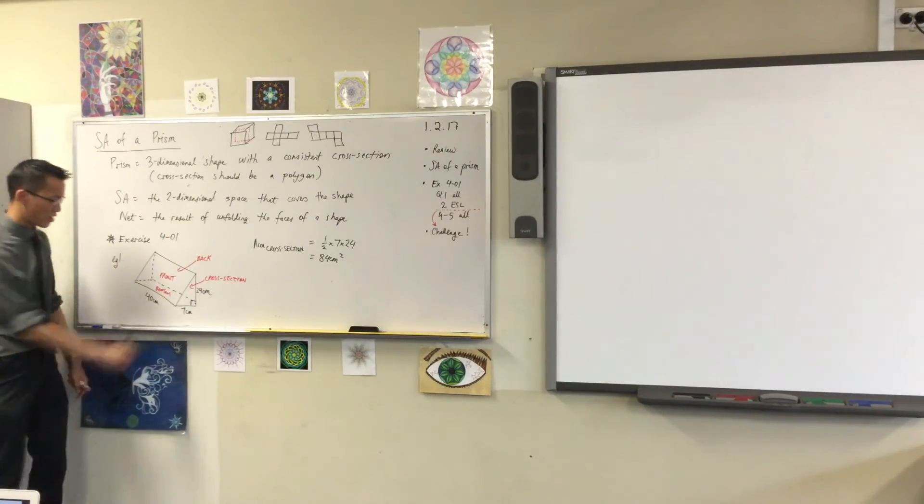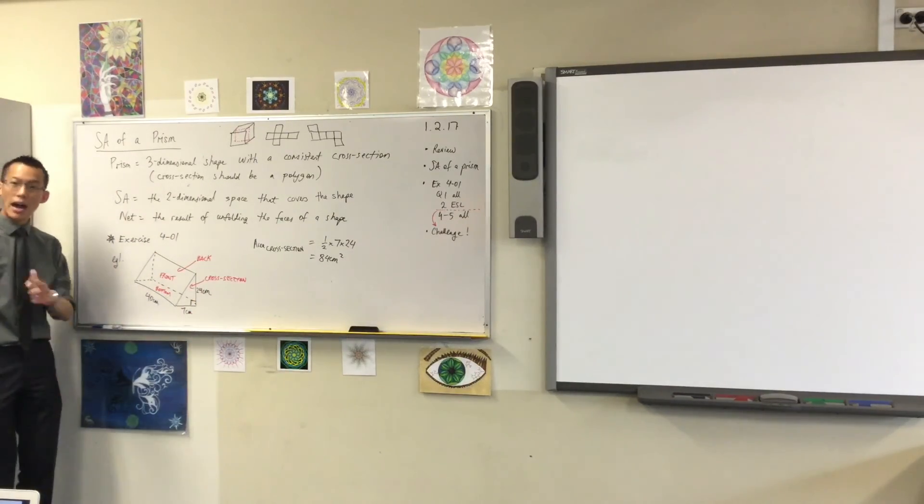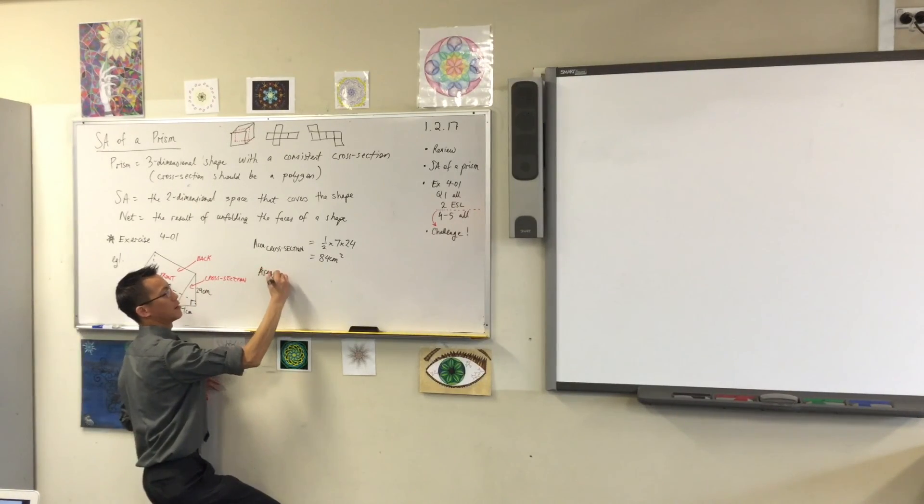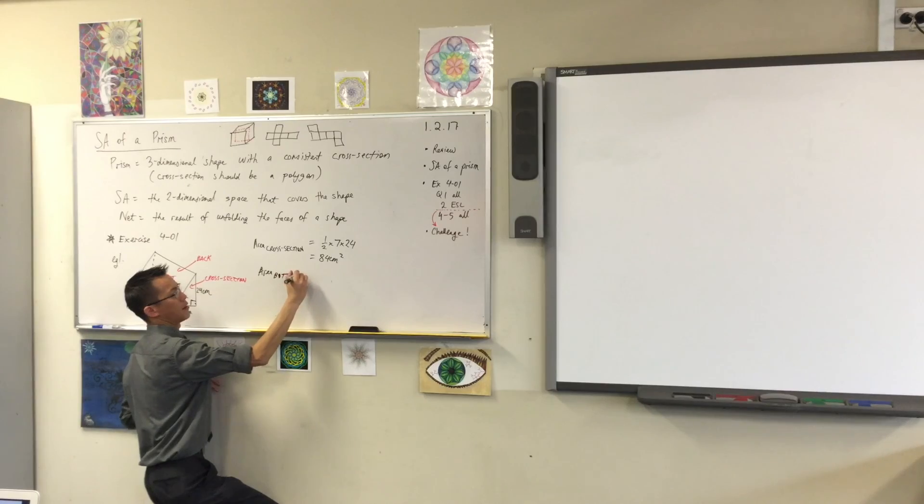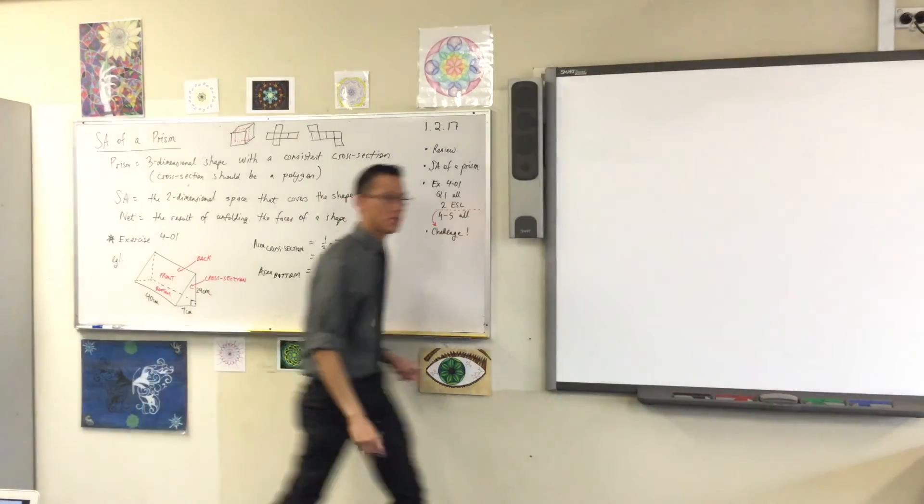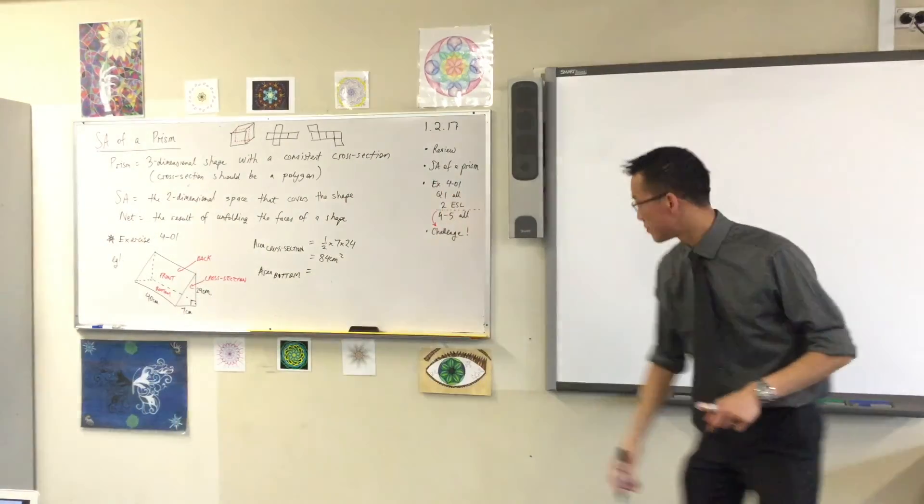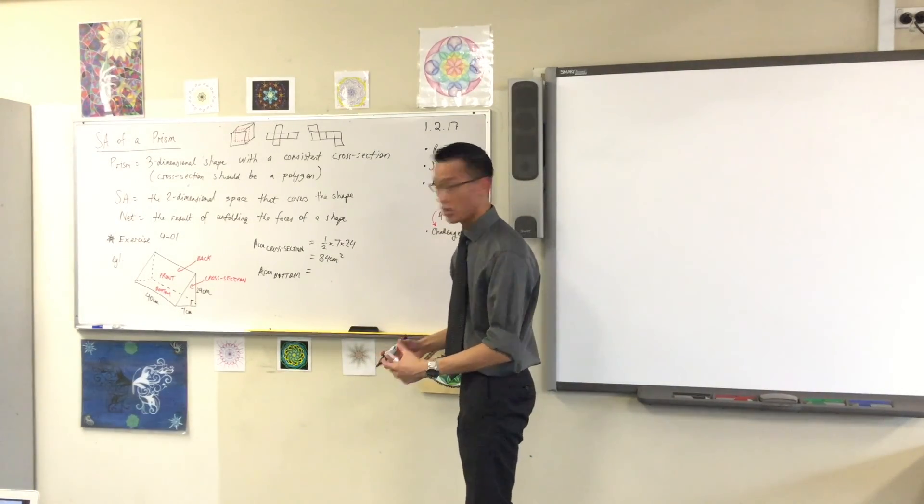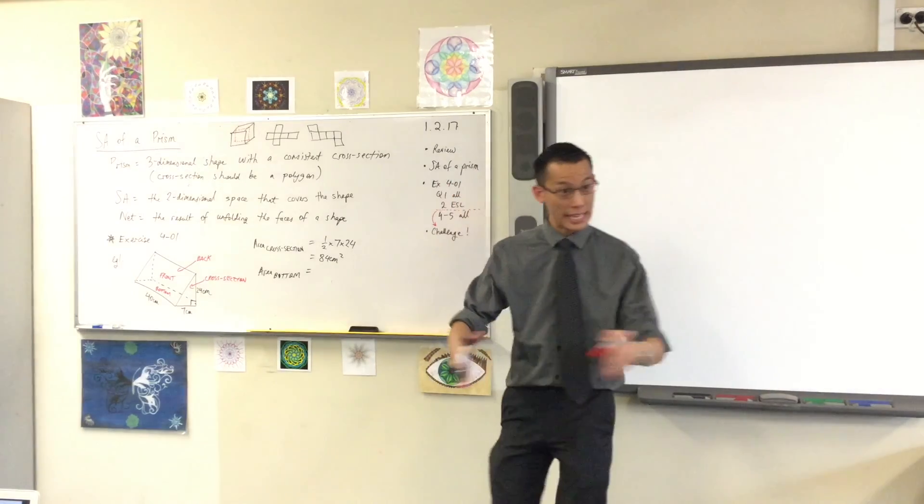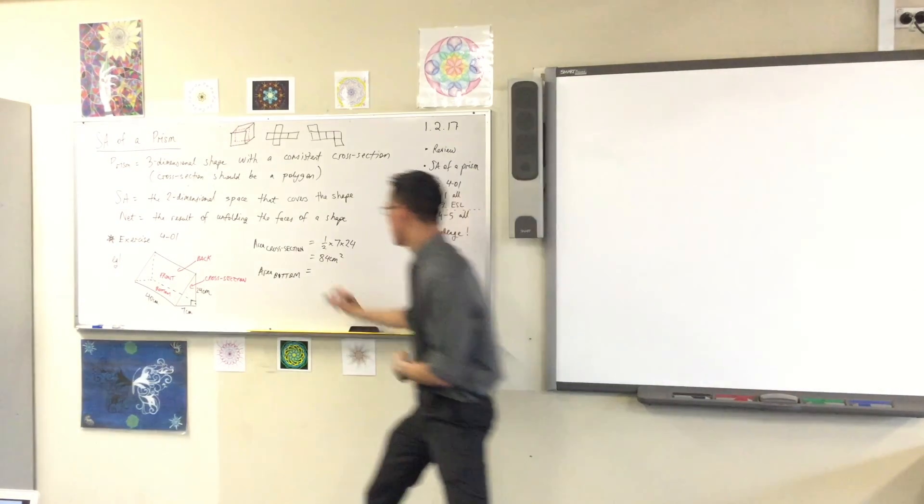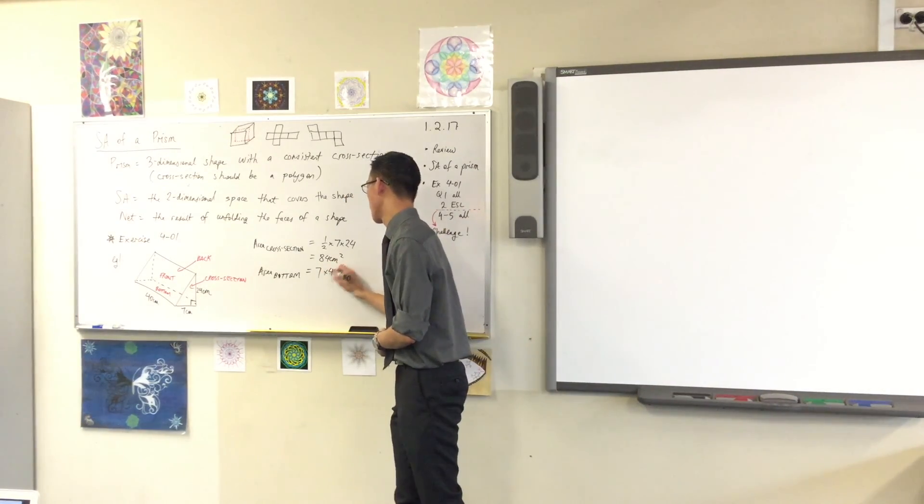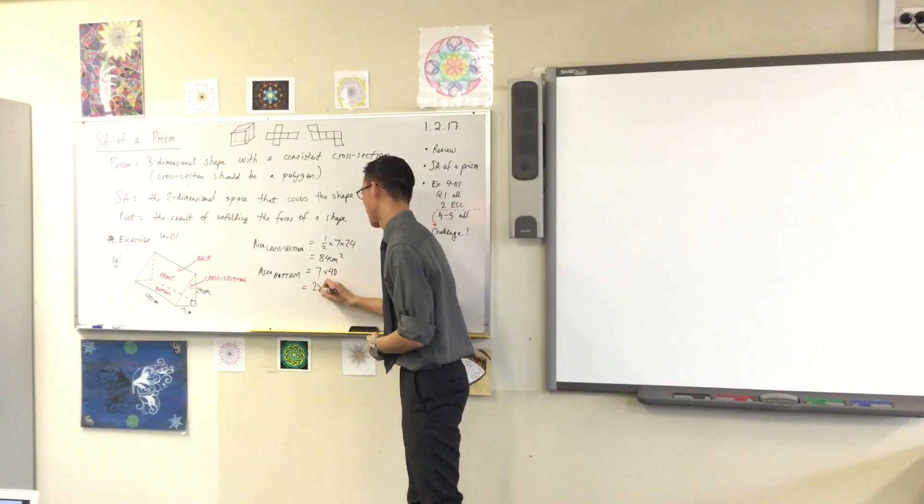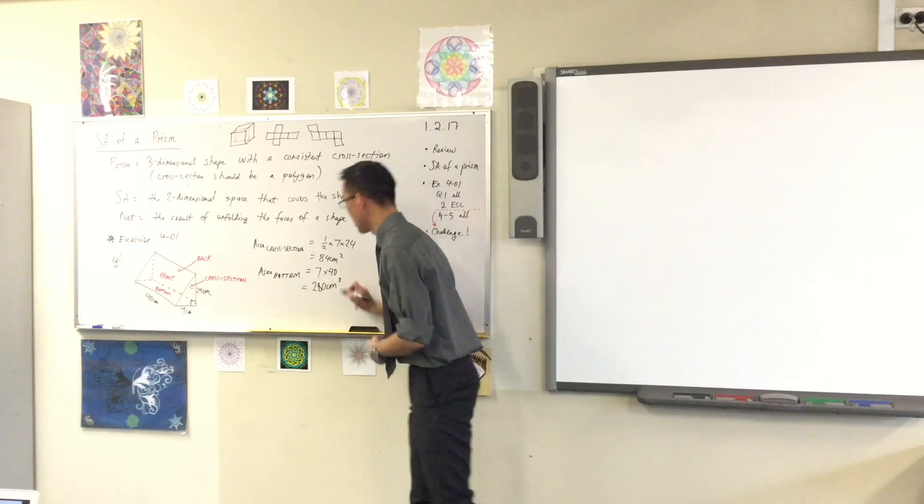Alright, I started with the cross section because I've got all those measurements there. I also have all the measurements on the bottom. So I'm going to say, area of the bottom. Look carefully at your diagram. What are the measurements that are relevant? 7 and the 40. And what kind of shape is it? Rectangle. It's just a rectangle. So it's just length times breadth. That's it. So 7 times 40. 280. Very good.